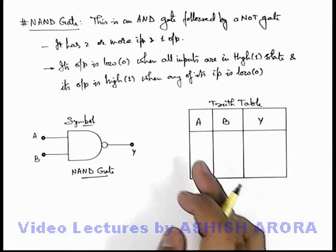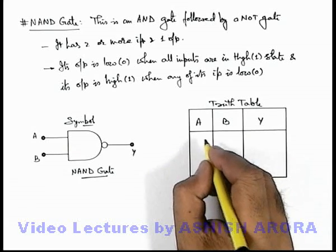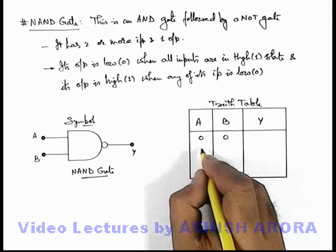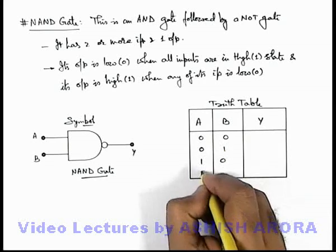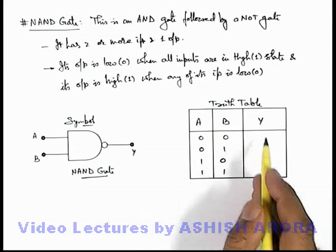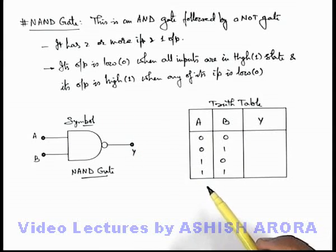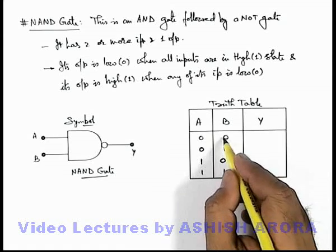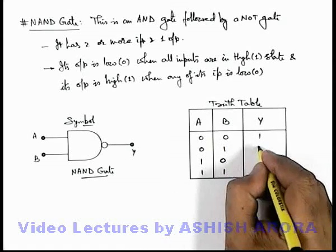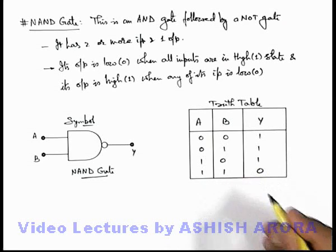We can write the combination of 2 inputs which are applied at NAND gate, and there are 4 combinations we've already studied: zero zero, zero one, one zero, and one one. And the corresponding outputs we can write based on the logic we have written just now, that is when any of the input is low, that is in first 3 combinations, the output will be high. And when both of the inputs are high, the output will be low.